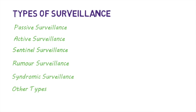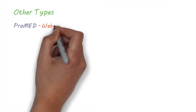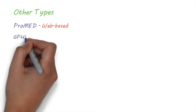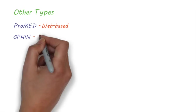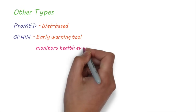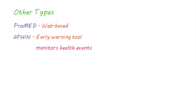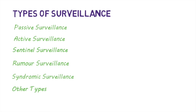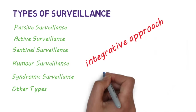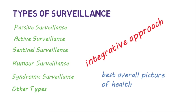There are other types of surveillance systems as well. For example, ProMed is a website that puts together reports of disease events, and the Global Public Health Intelligence Network is an internet-based early warning tool that uses an automated process to monitor online news sources for disease or significant health events. While there are many different surveillance types, each with its own advantages and disadvantages, an integrative approach using all sources of information provides the best overall picture of health.